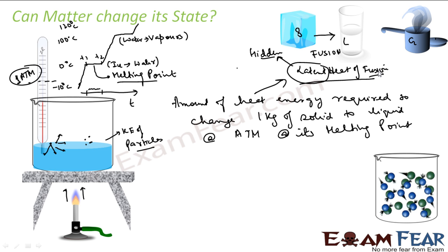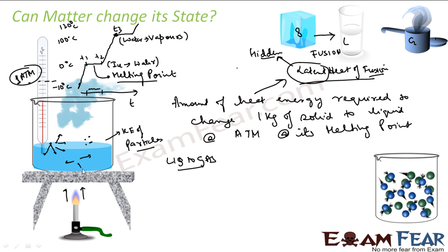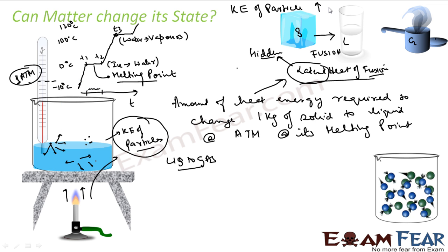Now we will talk about liquid to gas. Once we have liquid, when you heat it further, you will see water vapors coming up. Here also, if you heat it up, you will see the temperature increasing, and after some time the temperature becomes constant again. After all the ice is melted at 0 degrees Celsius, you supply more heat, and at time T3 you will see the temperature of the system has increased to 100 degrees Celsius. The particles are moving faster. The reason everything is happening is that when you supply more heat, kinetic energy of particles increases.